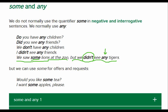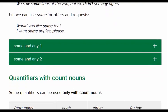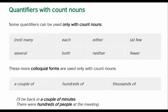But we can use 'some' for offers and requests. Offer: 'Would you like some tea?' Request: 'I want some apples, please.' Some quantifiers can be used only with count nouns. Here is a list: not many, each, either, a few, several, both, neither, fewer. These more colloquial forms are used only with count nouns: a couple of, hundreds of, thousands of. 'I'll be back in a couple of minutes.' 'There were hundreds of people at the meeting.'